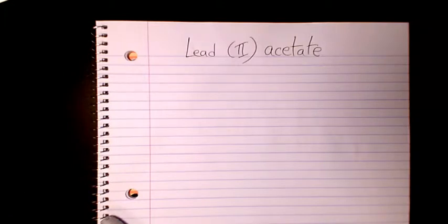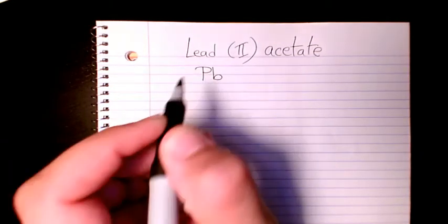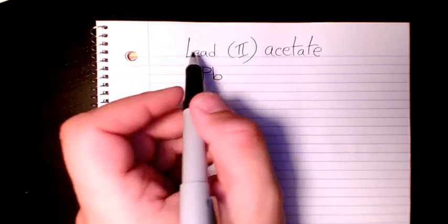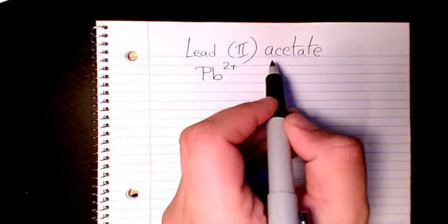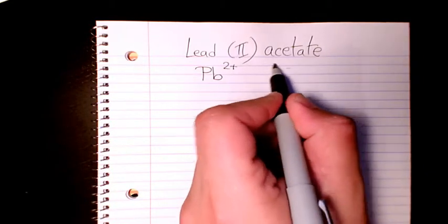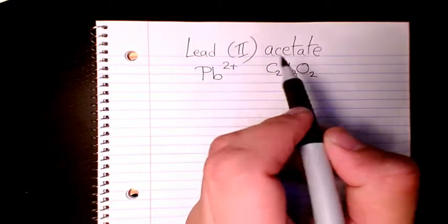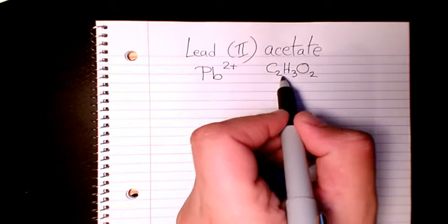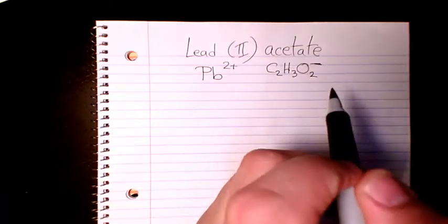So lead (II), the symbol is Pb, and the charge here, because we have (II) here, is 2+. And on the other hand, acetate is the polyatomic ion. It is C2H3O2 with a charge of negative one.